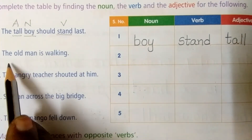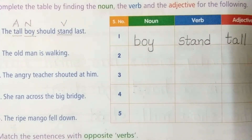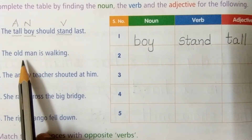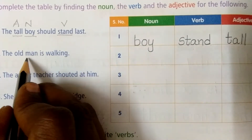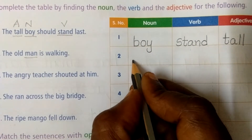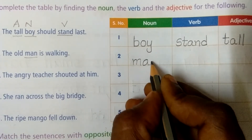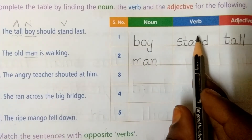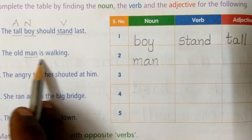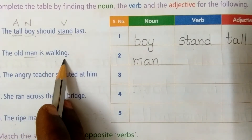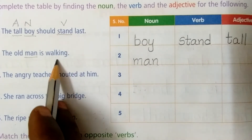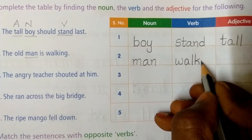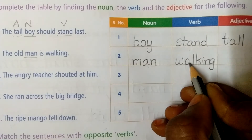Second sentence: 'The old man is walking.' What is the noun? The common noun is 'man.' Write down M-A-N. Man is the noun here. Next, verb is an action word. The verb here is 'walking.' Write down 'walking' in the verb's place: W-A-L-K-I-N-G.